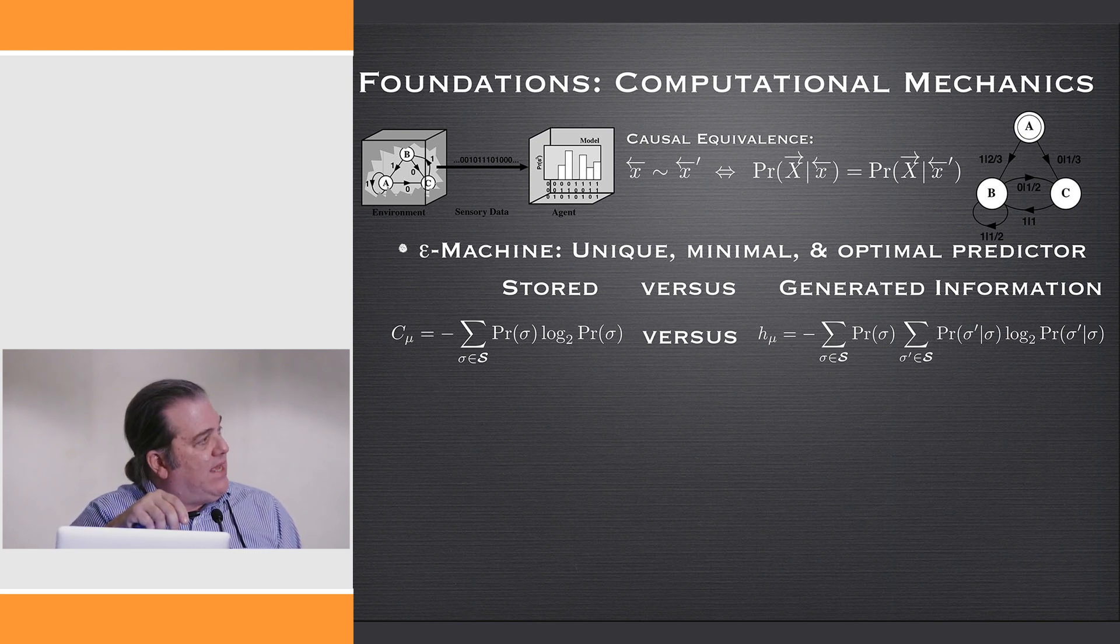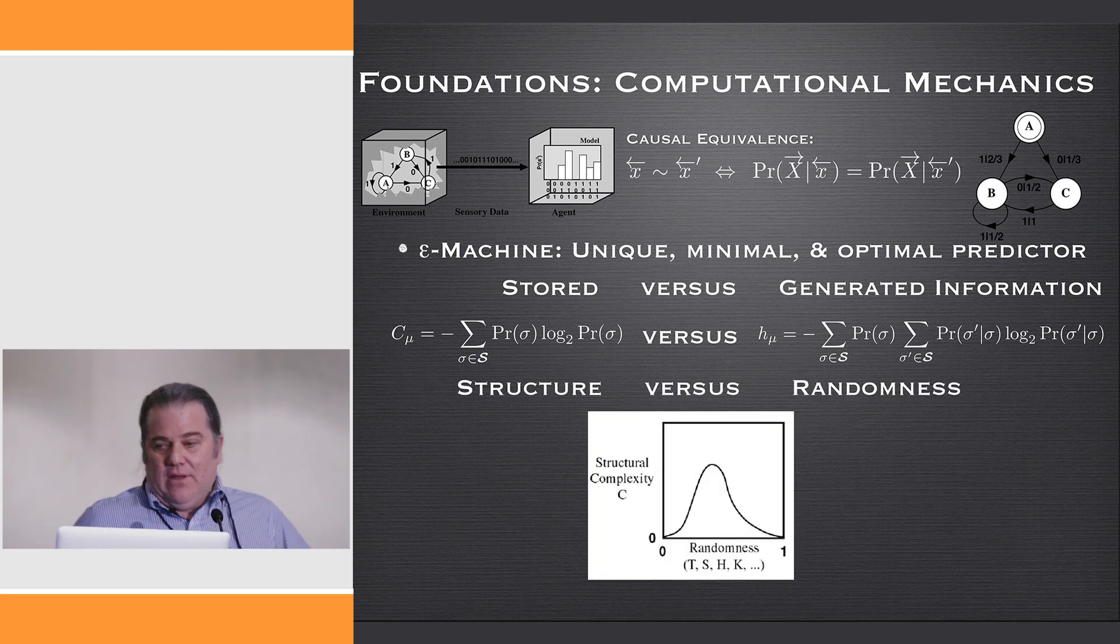We have this set of causal states sigma—we just look at the distribution over time and quantify the amount of information there. So it's Shannon information in the causal states. The state-to-state average transition uncertainty is the entropy rate. This is a nice duality.